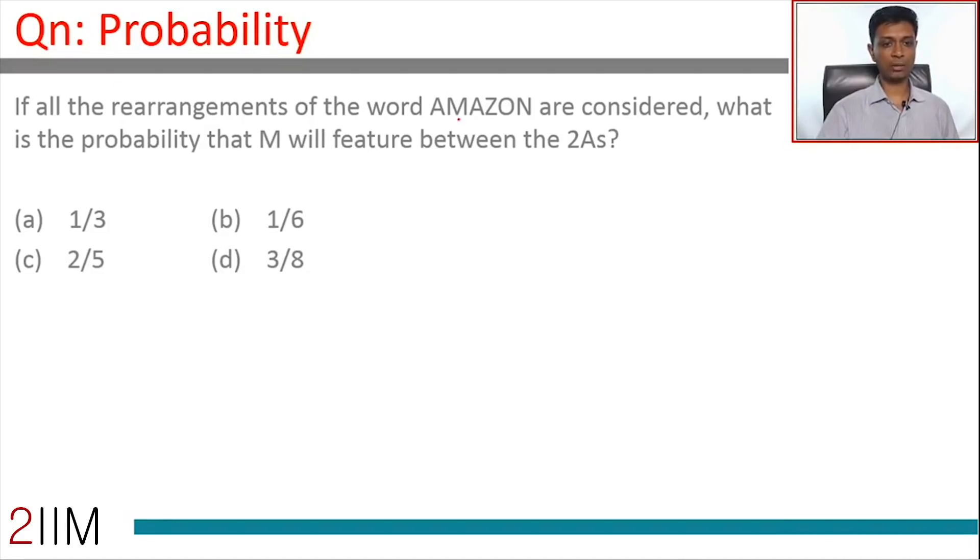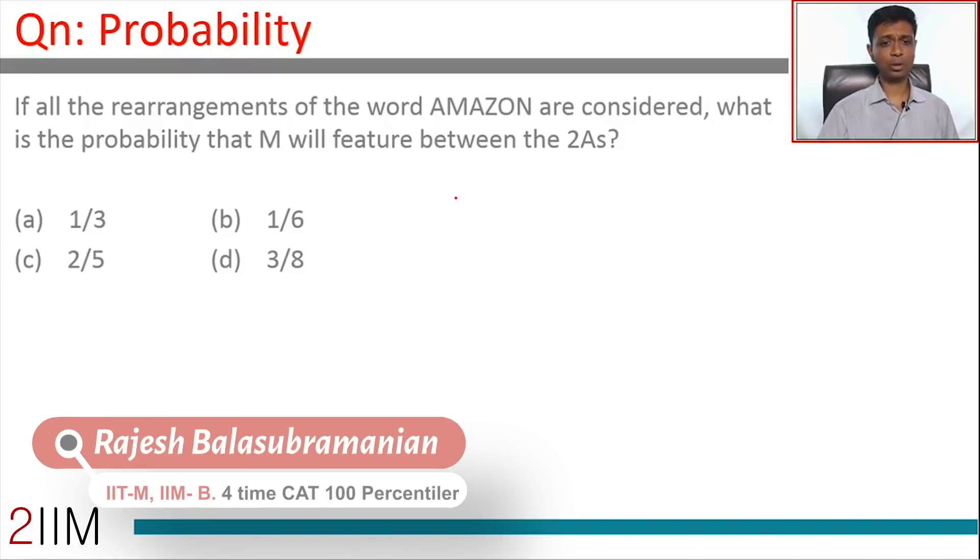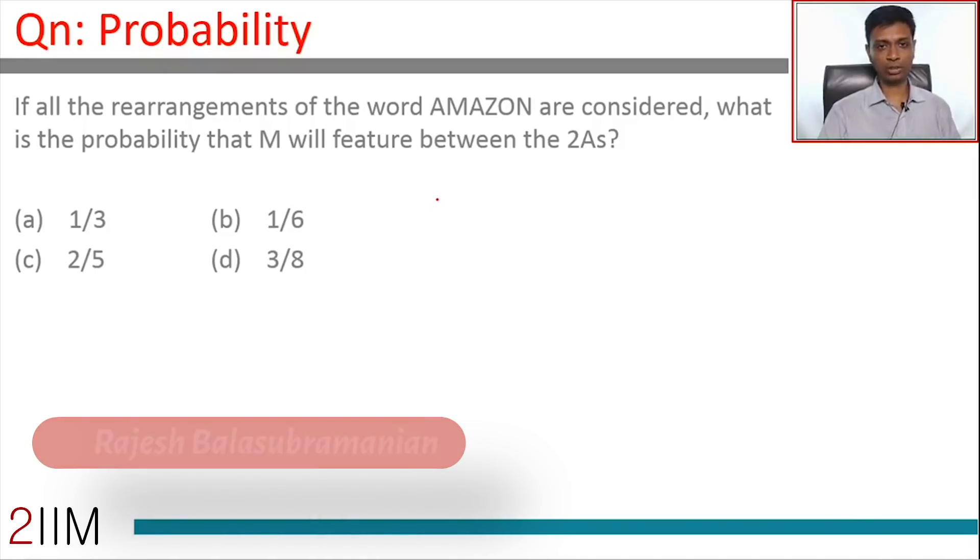If all the rearrangements of the word AMAZON are considered, what is the probability that M will feature between the two A's? M somewhere in between the two A's. We usually solve all our questions with the more roundabout method and then see the juicier method. I'm going to invert that now.